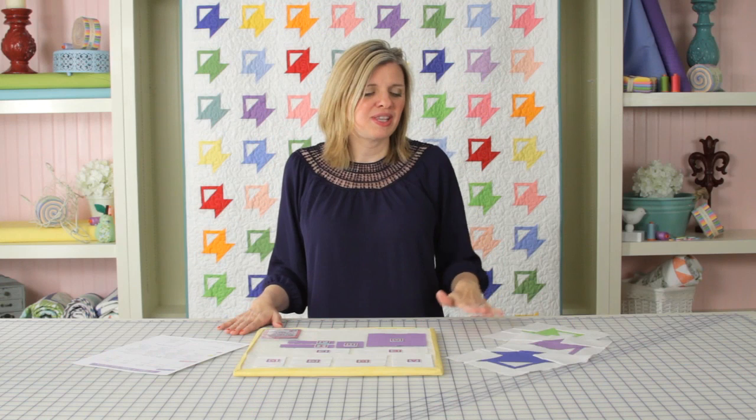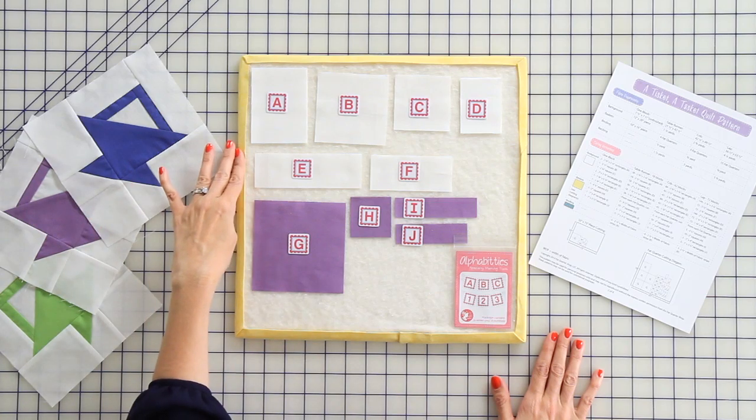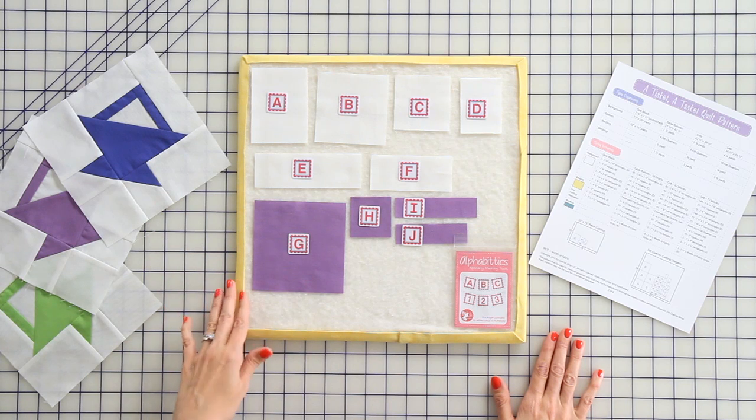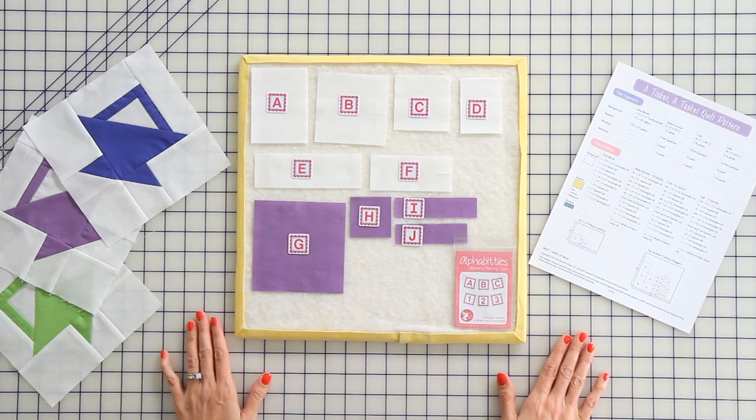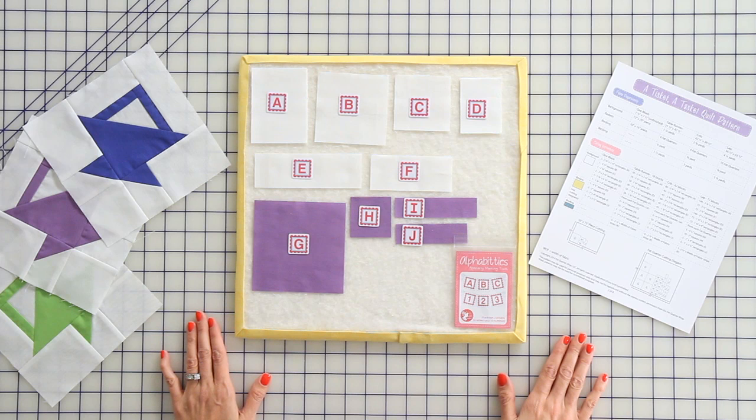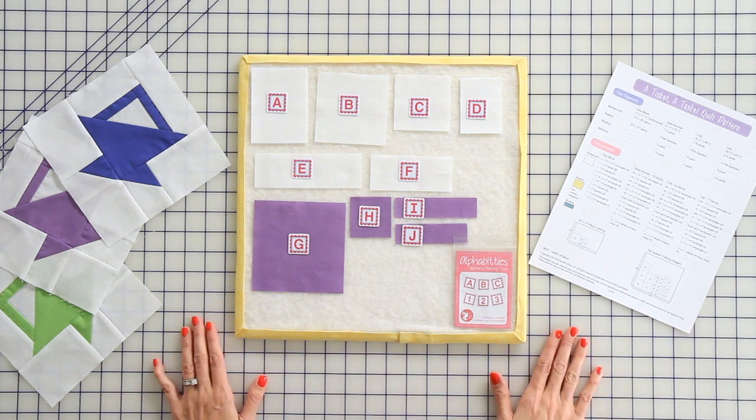Today, I'm going to show you how to make one of these cute basket blocks. You're going to be using one background fabric and one basket fabric. Before you cut your fabrics, starch and iron them, and then just refer to your free pattern for instructions on cutting. I've cut my fabrics and put them on my design board and labeled them with my Alphabitties. So let's get sewing.